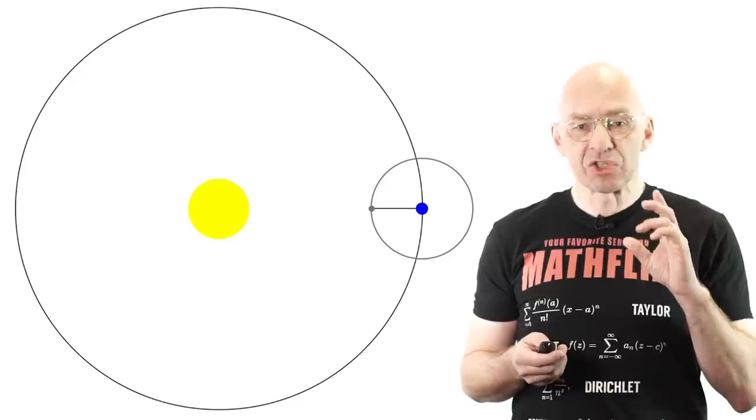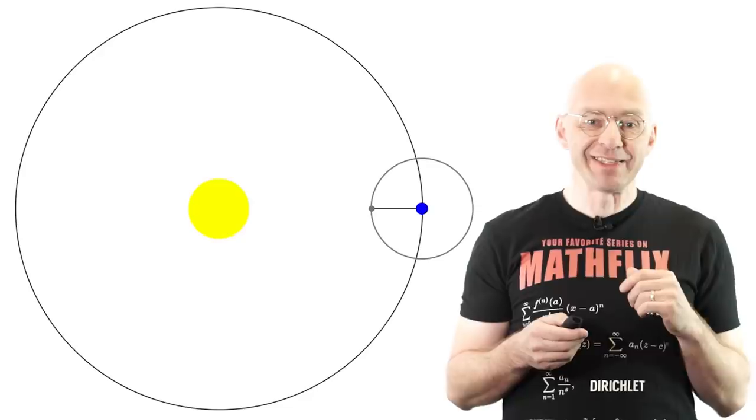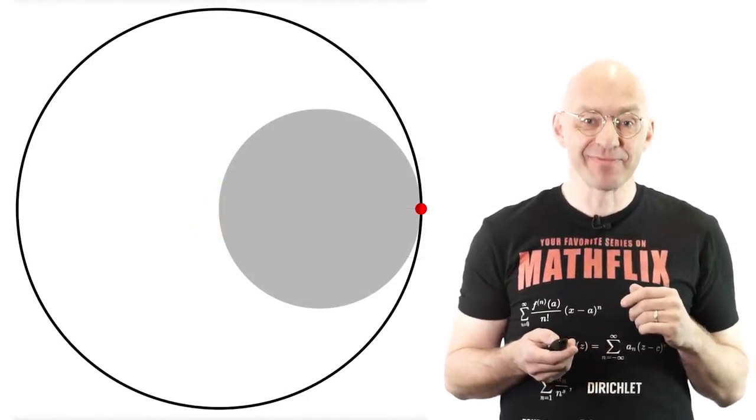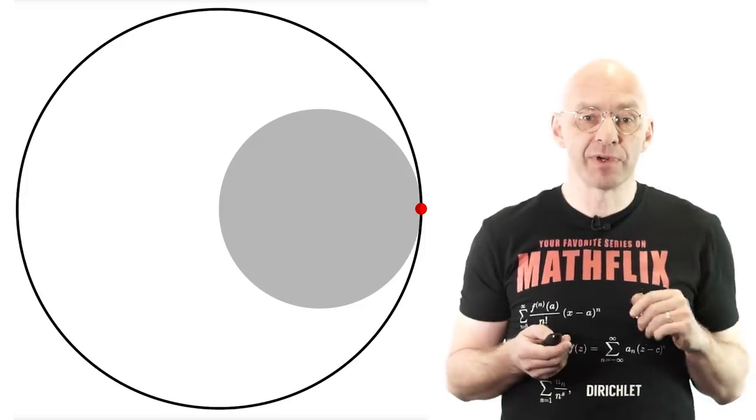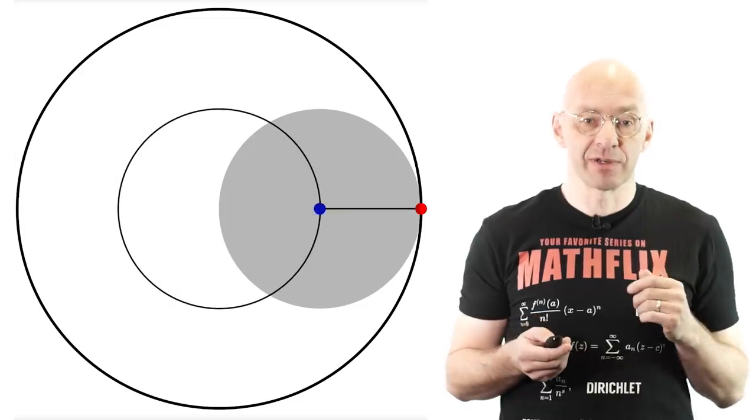For a really extreme example, the orbit can be a line segment. Yes, that coin rolling business that I showed you earlier can also occur in the setting. Here the moon is the red point on the rim of the rolling circle and the planet is the center of this little circle.